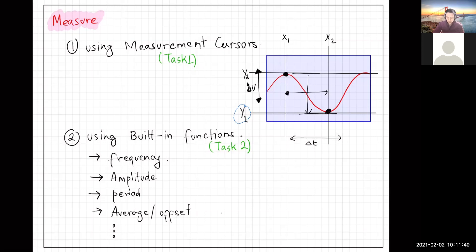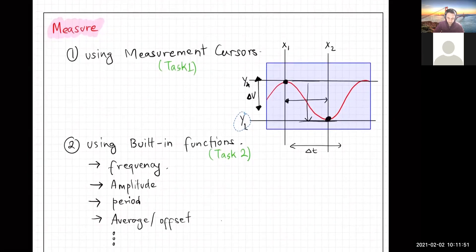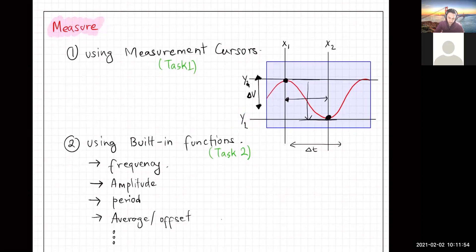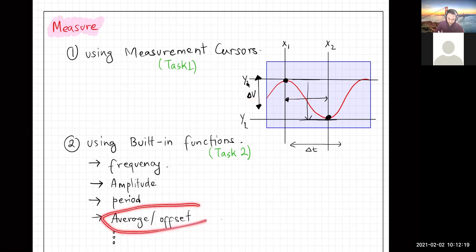The built-in functions use algorithms to calculate measurements without cursors. Examples include frequency, amplitude, period, and average. Average is something difficult to measure with just cursors, since you can never quite center them exactly. The built-in function takes all the data, performs the integration, and calculates the true average of the signal.